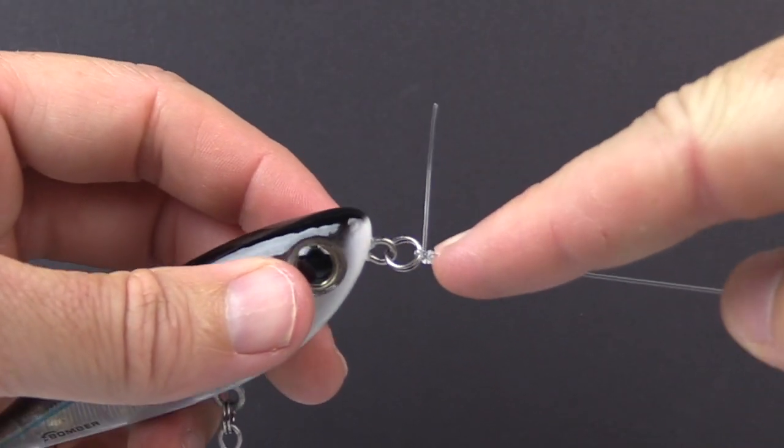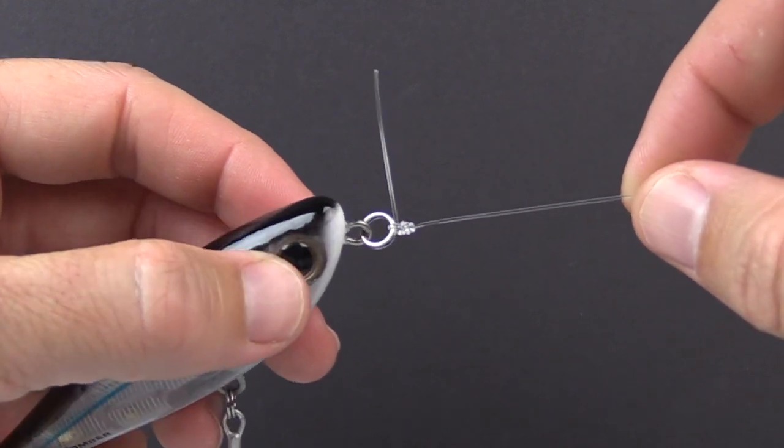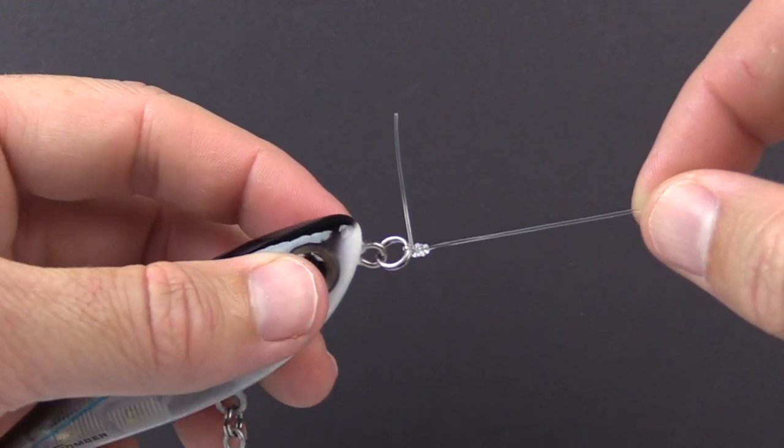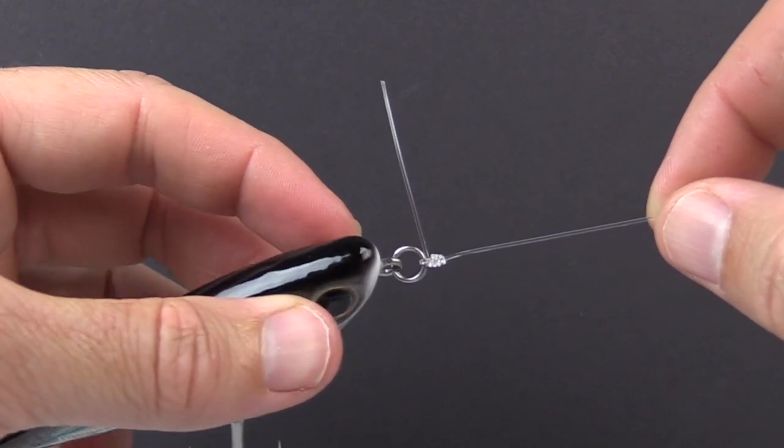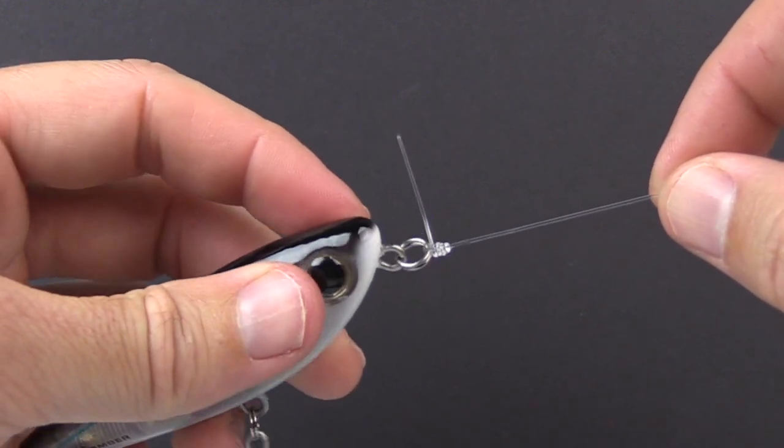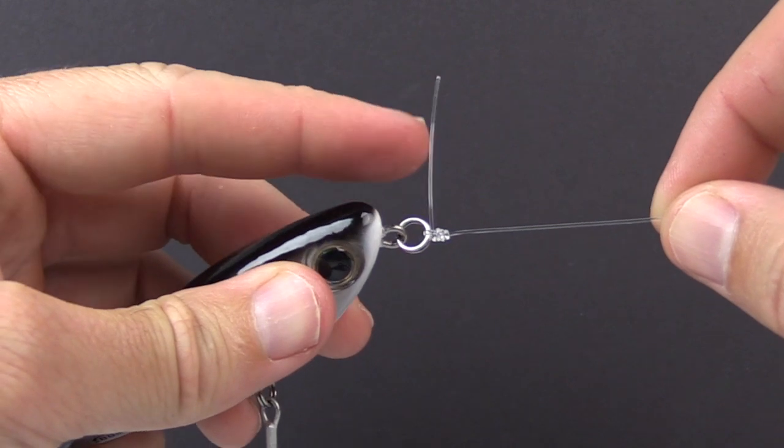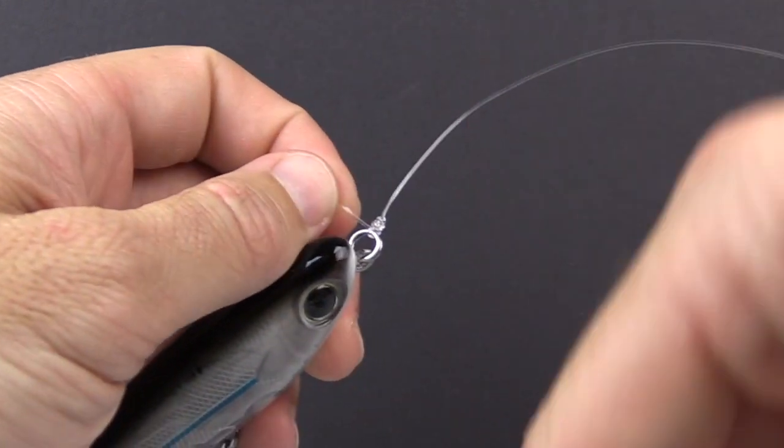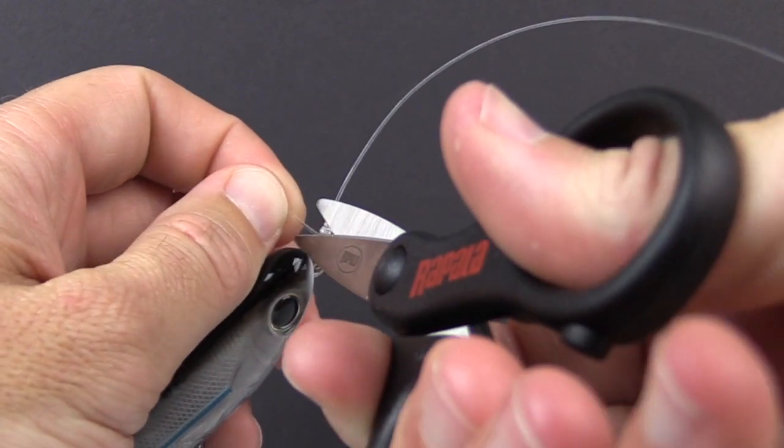And you know you did it right when you can see these coils are all just stacked on top of one another. They're in a nice clean order and they're not going over one another, they're not bunched up, they're just right there stacked on one another and the tag end will typically just pop straight up at a 90 degree angle. So now at this point we can cut the tag end and we are done.